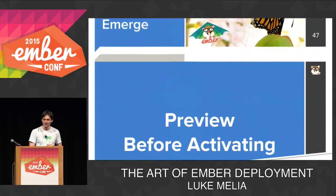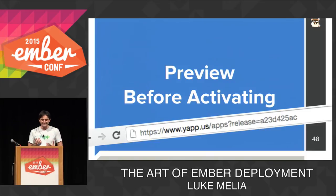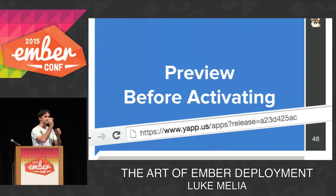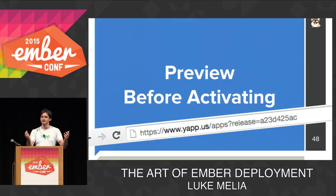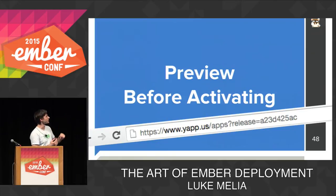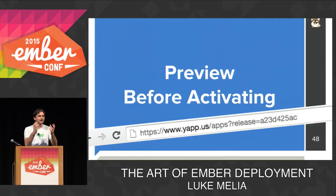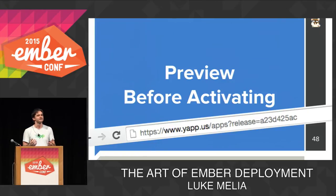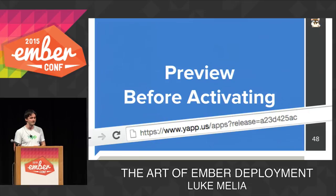One thing we realized quickly is that we can preview before activating. When we deploy a new build — a new batch of HTML pointing to static assets — into our server environment, we don't necessarily have to start serving it immediately to users. Instead, we can serve it only given a particular query string, like a release query param identifying a particular release to preview. A developer can look at their new code running in the production environment, talking to the production API, before any user sees it. The level of confidence when you flip that switch is pretty substantial.